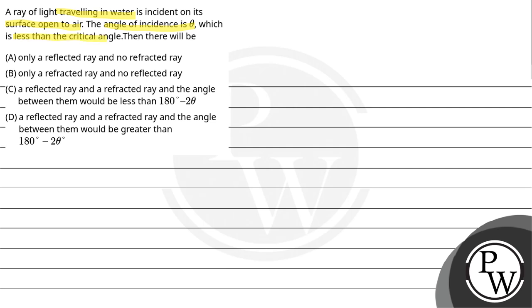Then there will be option A only a reflected ray and no refracted ray. Option B only a refracted ray and no reflected ray. Option C a reflected ray and refracted ray and angle between them would be less than 180 degree minus 2 theta. Option D a reflected ray and refracted ray and angle between them would be greater than 180 degree minus 2 theta.